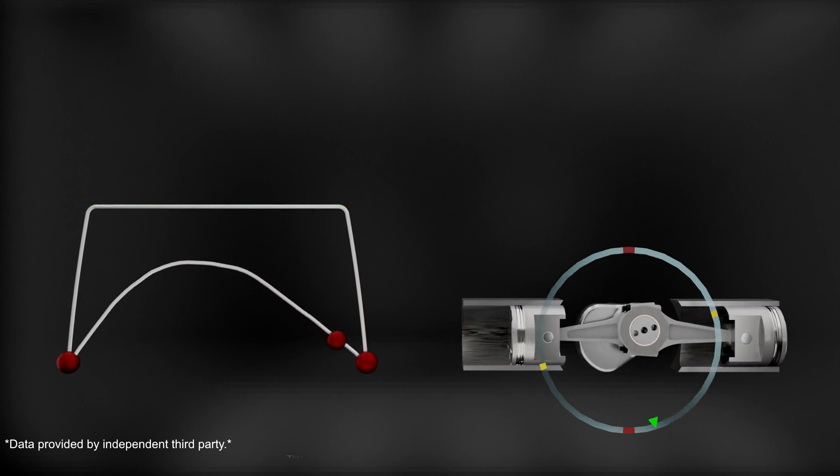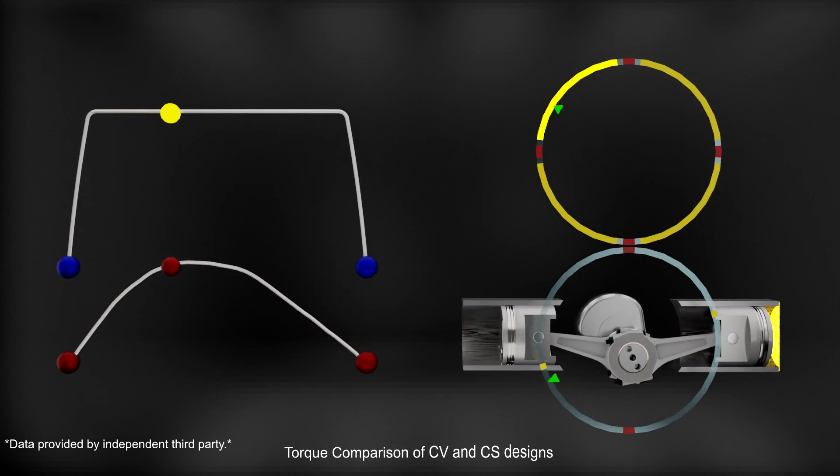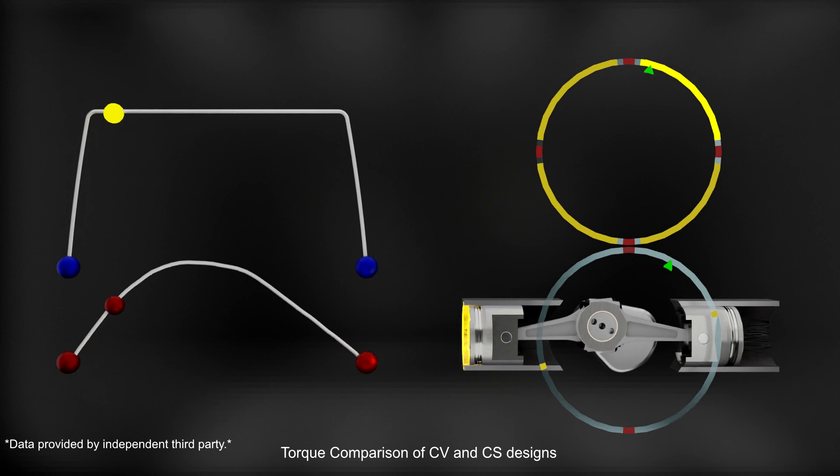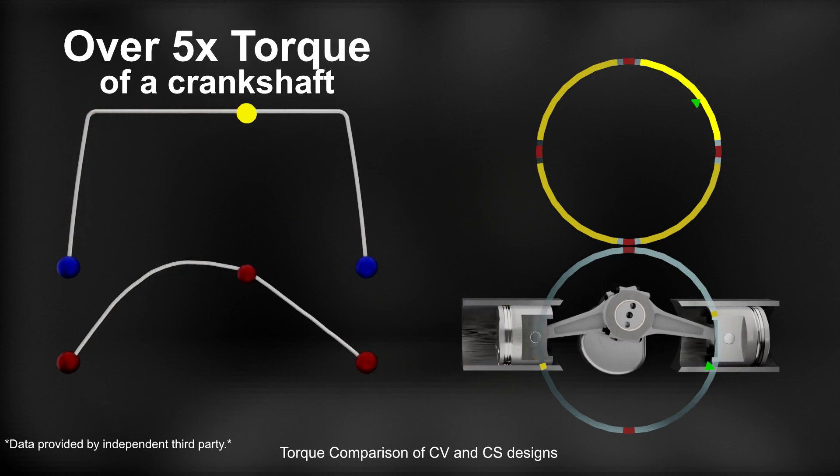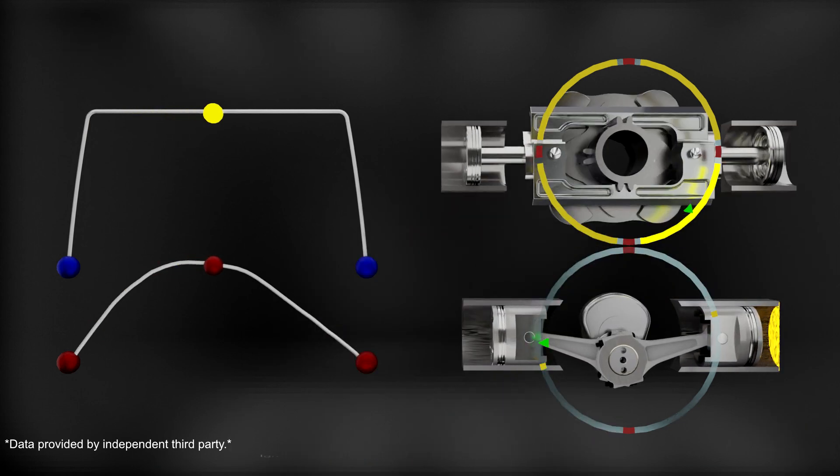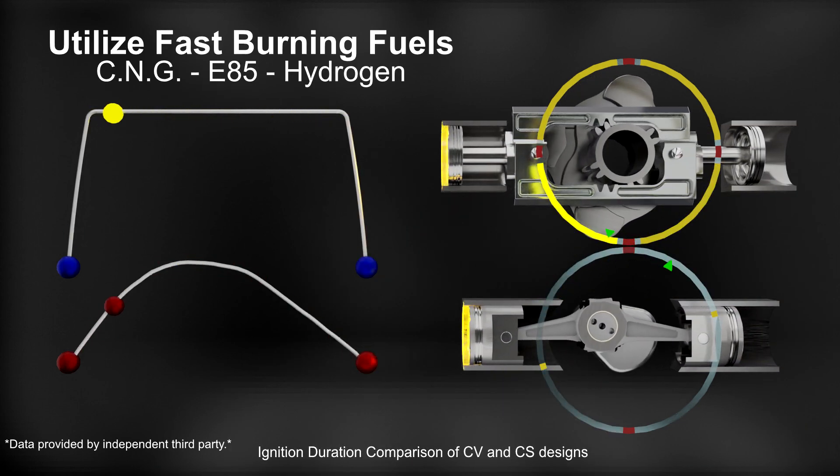Here is the torque curve for the CV design. Shortly after ignition occurs and combustion pressure is at its highest, the CV reaches its maximum leverage, transferring the piston linear motion to rotary motion with over five times the power output of the CS. This is also beneficial for the use of rapid burning fuel such as natural gas, ethanol or hydrogen.